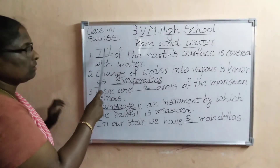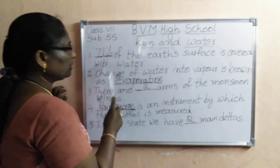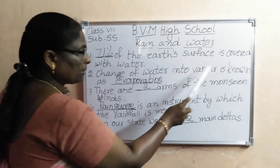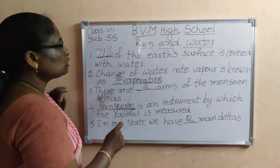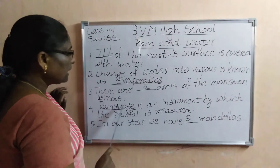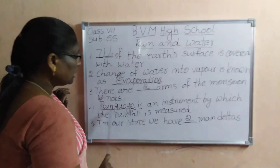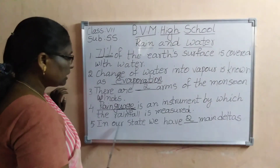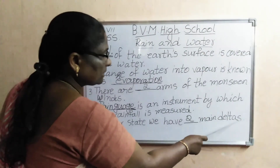71% of the earth's surface is covered with water. Change of water into vapor is known as evaporation. There are two forms of monsoon winds. Rain gauge is an instrument by which the rainfall is measured. In our state we have two main deltas.